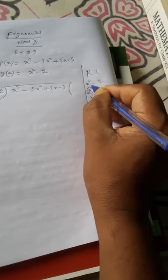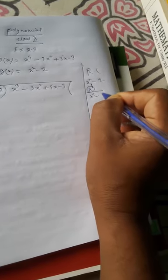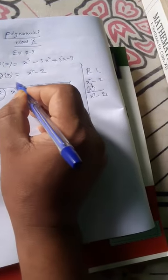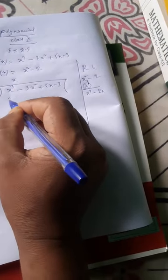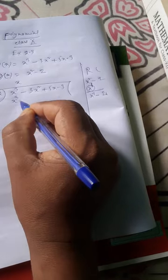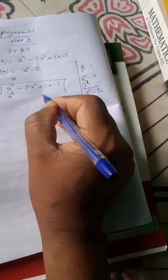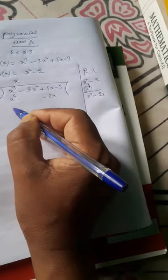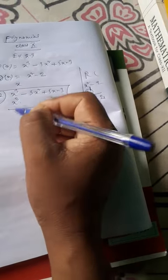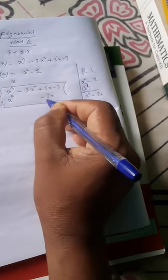So we are getting x cube minus 2x. Now to minus it, the sign will change. X cube first time cancel.